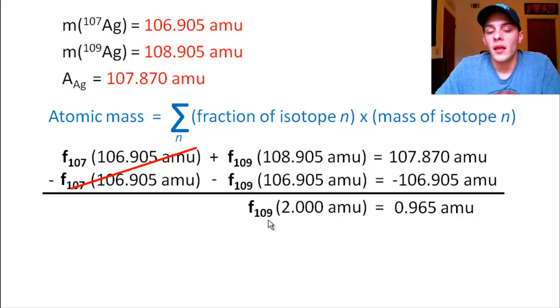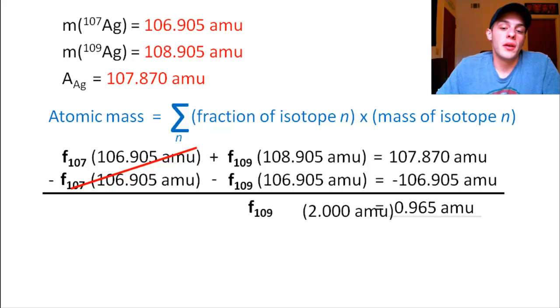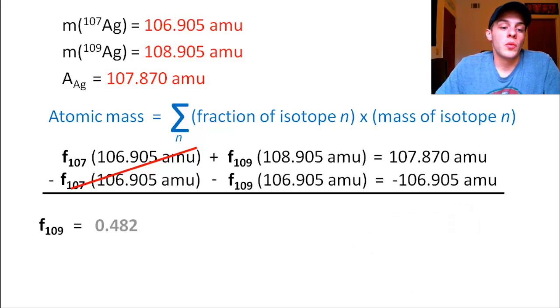So to get the fraction of silver-109, you simply divide that 0.965 amu by 2 amu. And that will give you your answer, which is 0.482. So this is how you get the fraction of silver-109. And now that we have the fraction of silver-109, we can easily get the fraction of silver-107.